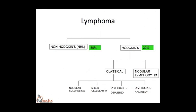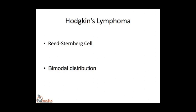The other category, nodular lymphocytic Hodgkin's, tends to occur in older individuals and most commonly presents with inguinal node involvement. The pathognomonic feature of Hodgkin's lymphoma is the Reed-Sternberg cell, which is a large binucleate cell often set in the background of other inflammatory cells, with an owl's eye appearance.